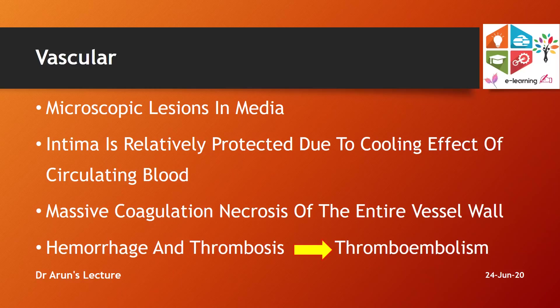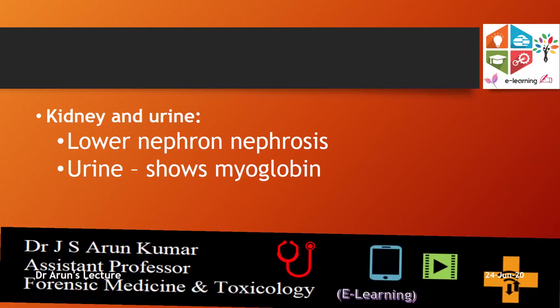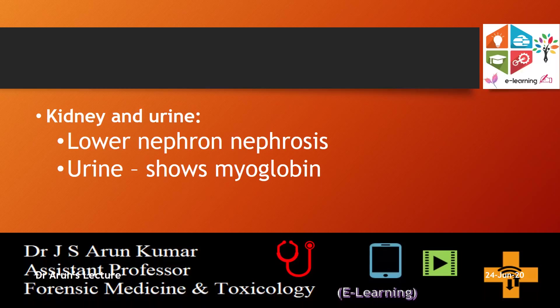The kidneys are affected due to crush syndrome and release of myoglobin into the circulation. Deposits of myoglobin can be detected in the urine, and lower nephrons may show features of nephrosis as a result of myoglobin entering and damaging the renal nephrons.